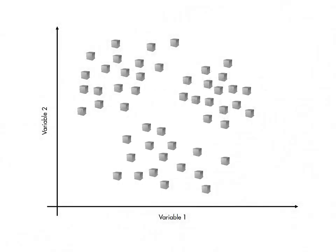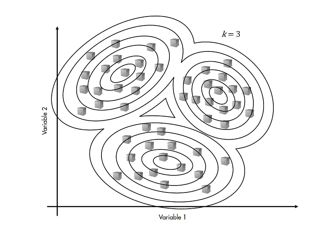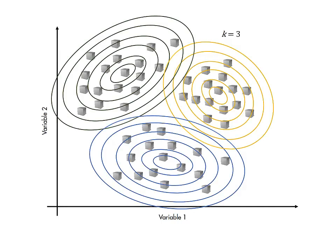You can cluster observations into a given number of groups by fitting a Gaussian mixture model to the data. A Gaussian mixture model is a distribution fit made up of k multidimensional Gaussian distributions. Observations are then grouped according to which of the k-Gaussians they are most likely to come from.